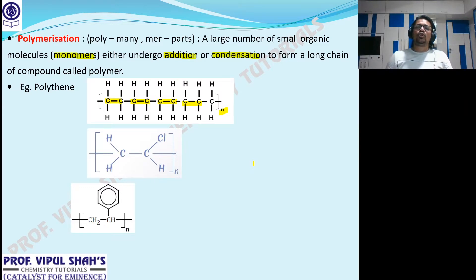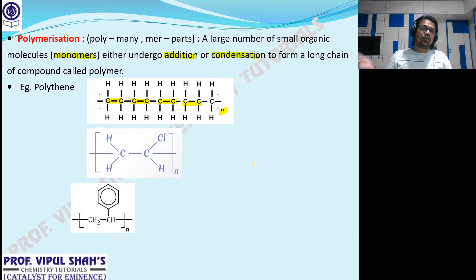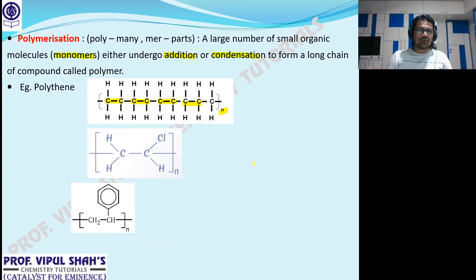Depending on the value of N, we will have the strength of the plastic. Like a thin plastic bag from a vegetable vendor versus a thick, strong bag from a supermarket — the strength depends on how many ethene units are linked, that is the value of N. That's polythene.